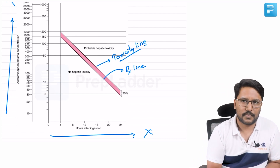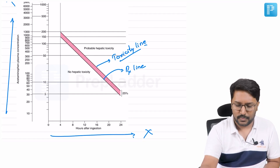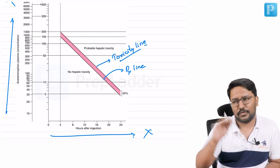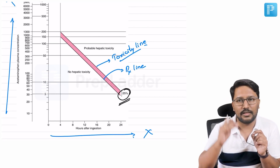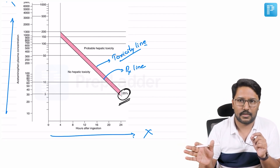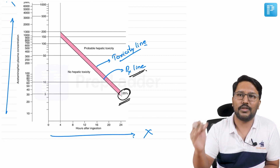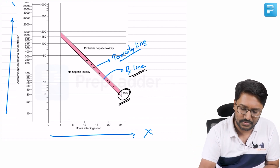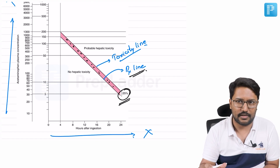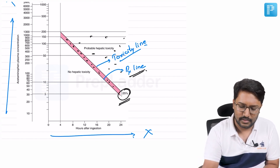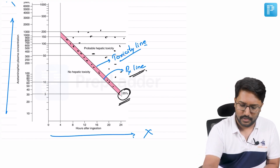To account for possible errors in estimation, sample collection, and dilution, the treatment line is set 25% lower than the toxicity line. Anything above the treatment line should be treated with N-acetylcysteine. The pink area you're seeing is below the toxicity line but above the treatment line — if paracetamol values fall anywhere above the treatment line, we treat with N-acetylcysteine.